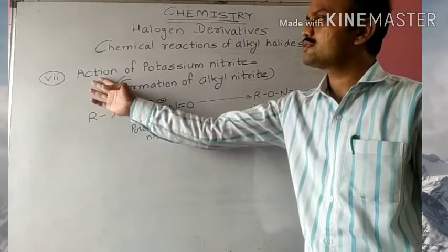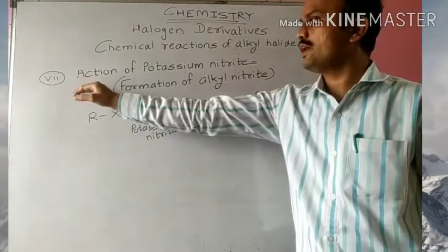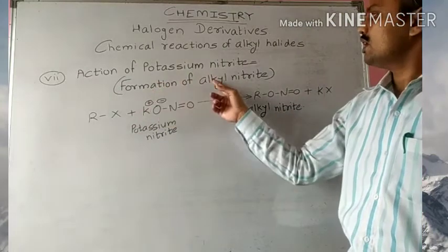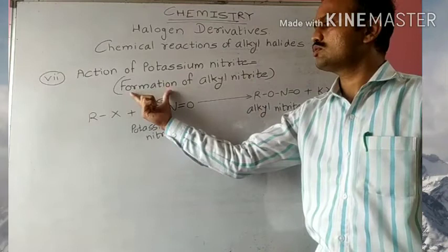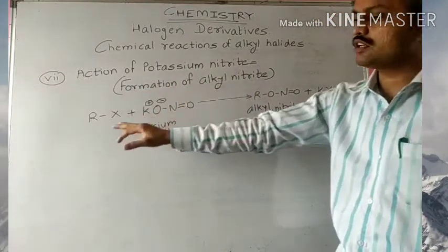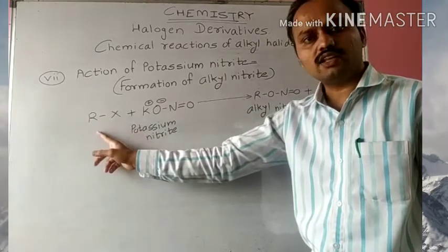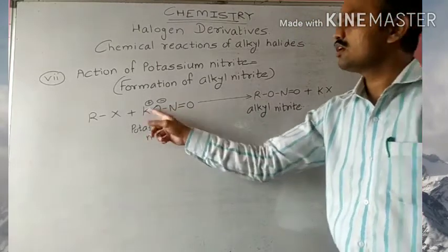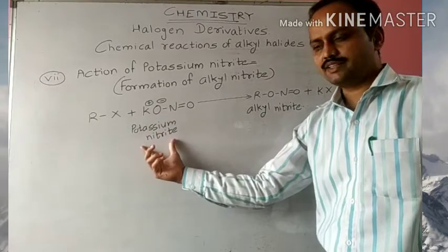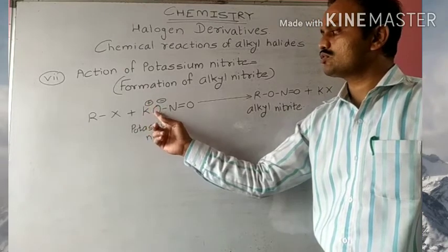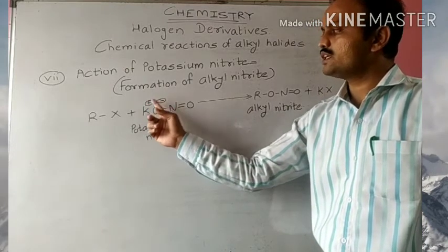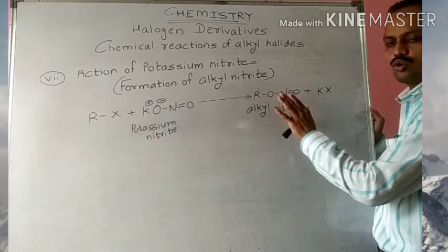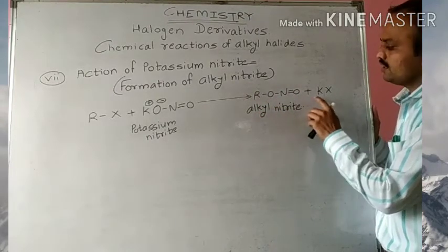In the next property of alkyl halides, we have the action of potassium nitrite on alkyl halides. In this reaction, we get alkyl nitrite as the product. Therefore, this reaction is also called formation of alkyl nitrite. The general reaction is: RX, that is alkyl halide, plus K-O-N-O, also written as KONO₂ — this is potassium nitrite. Potassium, due to lower electronegativity, and oxygen, due to higher electronegativity, carry plus and minus charges. The product is R-O-N-O, that is alkyl nitrite, and KX as the byproduct.